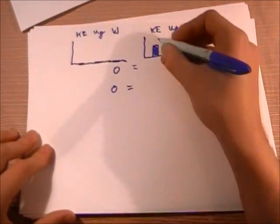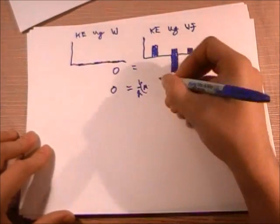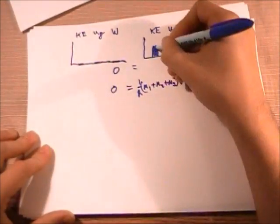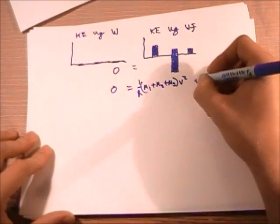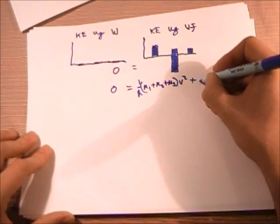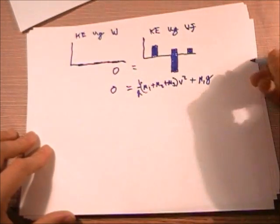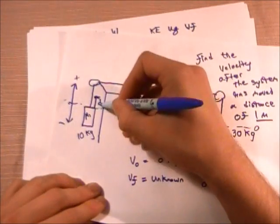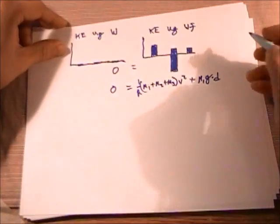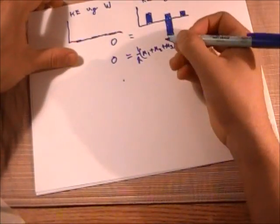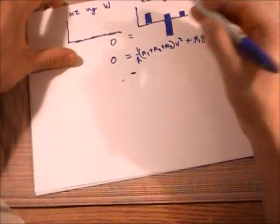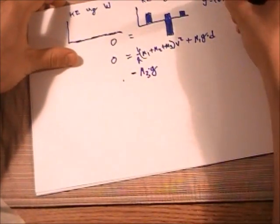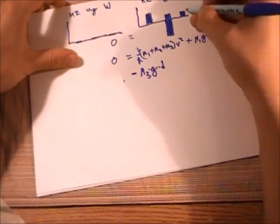Our equation basically becomes: zero equals kinetic energy, which is one-half times all masses in the system (m1 plus m2 plus m3) times velocity squared. Then for our potentials, we get the signs from our bars: plus m1 times g times its height change d, which gives us positive potential. Then minus m3 times g — where g equals 10 meters per second squared — times d, the distance it moved. We also have work due to friction.